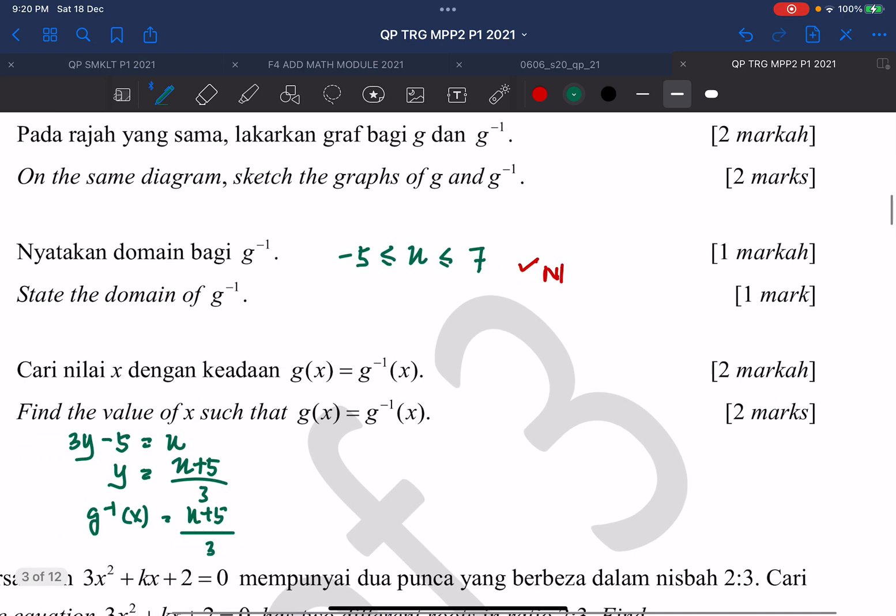So solve the equation, then you should get the answer. 9x minus 15 will be equals to x plus 5. 8x will be equals to 20. x will be equals to, just take 20 divided by 8.